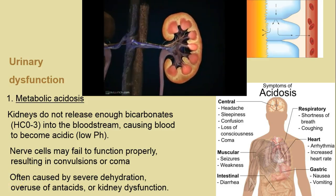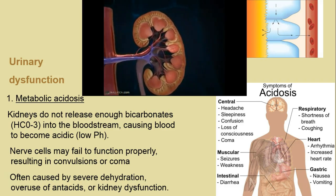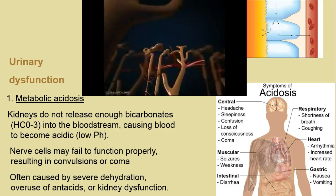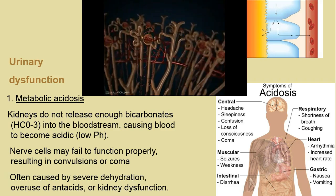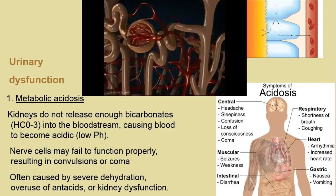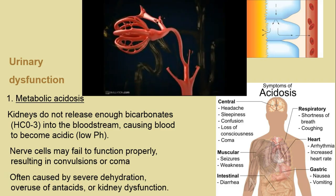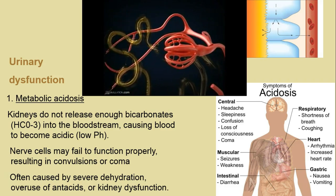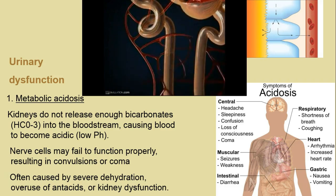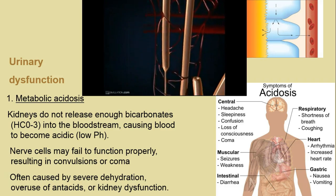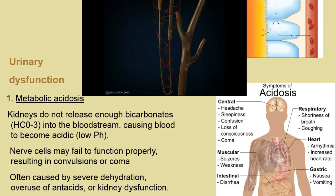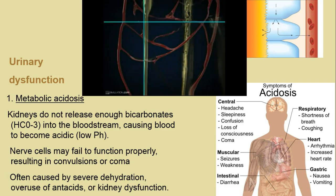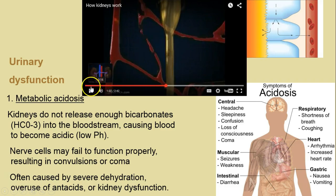Before we understand urinary dysfunction, let's review things. There's the kidney, the afferent vessel going into the glomerulus, the Bowman's capsule which is brownish, and inside is the glomerulus where there are tiny slits and blood is pushed with each heartbeat into the nephron. That is where we make urine — the proximal tubule first, then down to the loop of Henle where we extract water, then back up for secretion to dump what we don't want from the bloodstream.